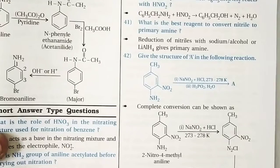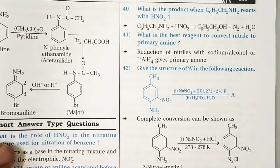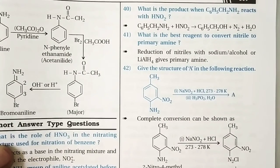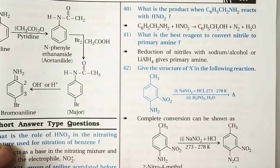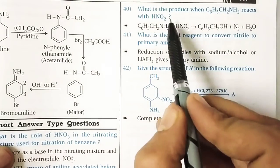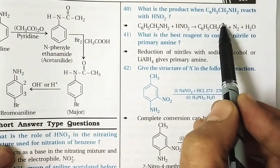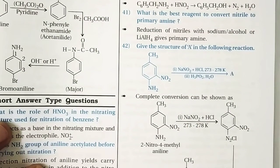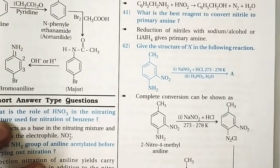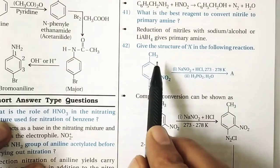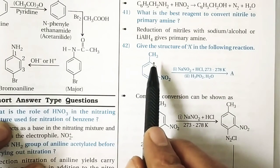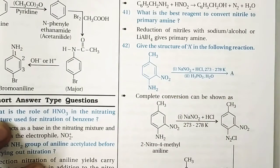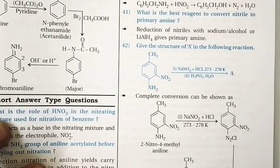Question 40: What is the product when C6H5CH2NH2 reacts with HNO2? Since benzylamine is not an aromatic amine, the NH2 group is simply converted to the respective hydroxyl group and nitrogen gas is evolved. Question 41: What is the best reagent to convert a nitrile to a primary amine? Lithium aluminium hydride (LiAlH4) or sodium and ethanol can be used.